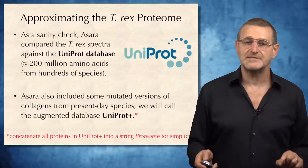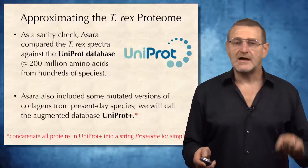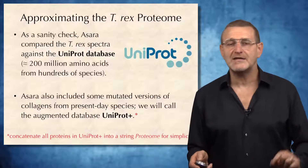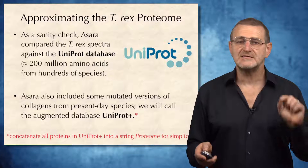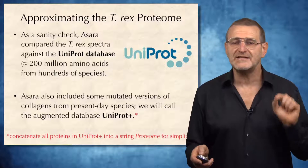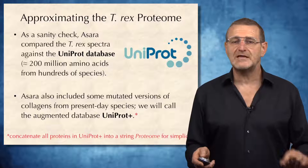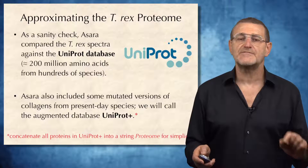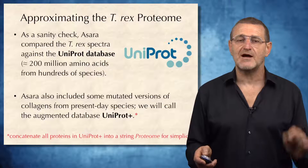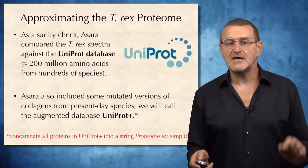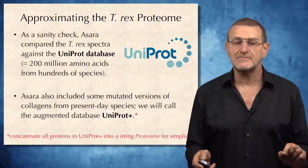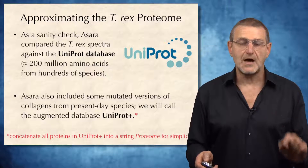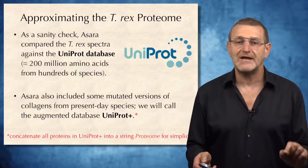The question is, to which ones? Therefore, Azara formed a database of collagen proteins. But as a sanity check, he actually compared the T. rex spectra against the entire UniProt database of all proteins known, which currently consists of 200 million amino acids from hundreds of species.